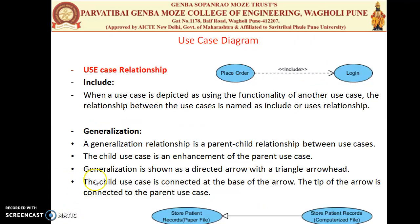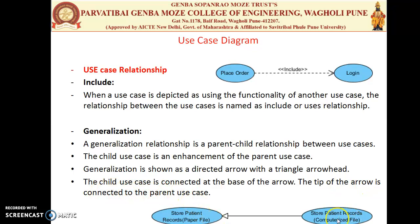The third relationship is Generalization. The Generalization relationship is a Parent-Child relationship between use cases where the Child Use Case is an enhancement of the Parent Use Case. For example, Store Parent Record in a Paper/File/Muster is the Parent Use Case, and Store Patient Record in a Computerized File is the Child Use Case. It is denoted by a solid arrow with a triangle arrowhead pointing from the Child Use Case to the Parent Use Case.